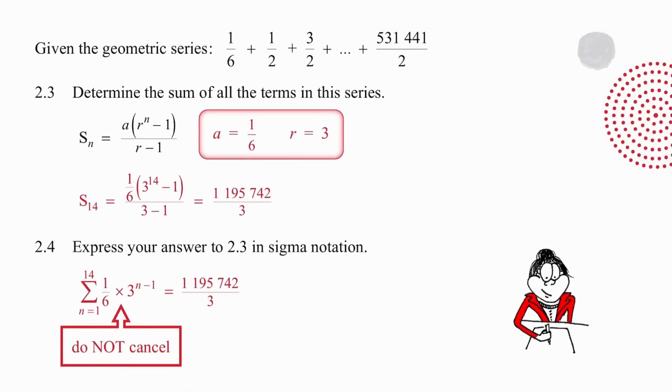In question 2.3, we are going to work out the sum of all the terms. We know from earlier work that a is 1 sixth and we also know that r is equal to 3. Substitution and careful calculation gives us the answer.